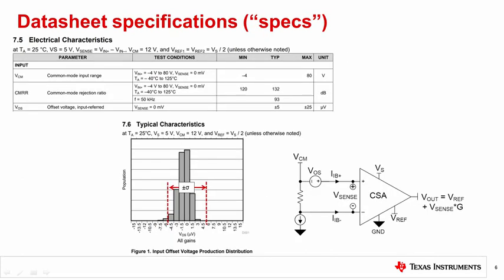Before detailing the specifications individually, let us address the structure. Specifications are broken up into two sections, the parametric table and the typical datasheet plots. Each will have their own global testing conditions listed at the top, which detail how the device is tested unless otherwise noted.